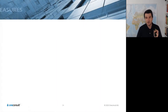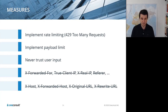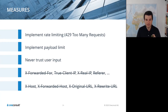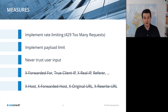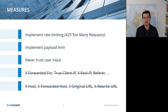Measures to take: implement rate limiting for your API — 429 is the standard response. Implement payload limits on size, number of records, or CPU processing time. Never trust user input; malicious input can be in parameters but also in header fields. Headers affected include X-Forwarded-For, X-True-Client-IP, and X-Real-IP. Conversely, headers like X-Forwarded-Host set by infrastructure can enable attacks like web cache poisoning if an attacker inserts them and they are interpreted.